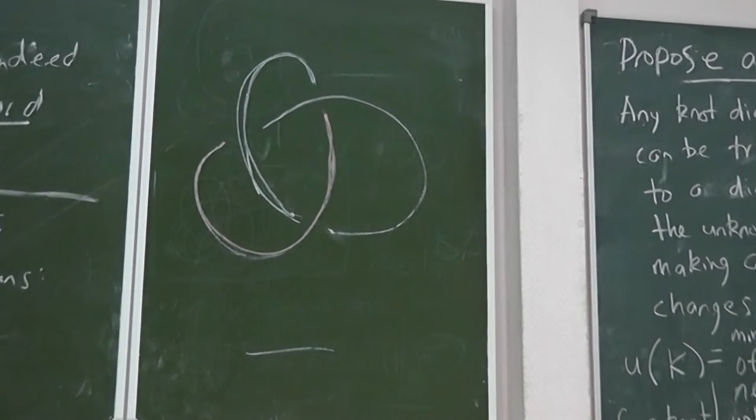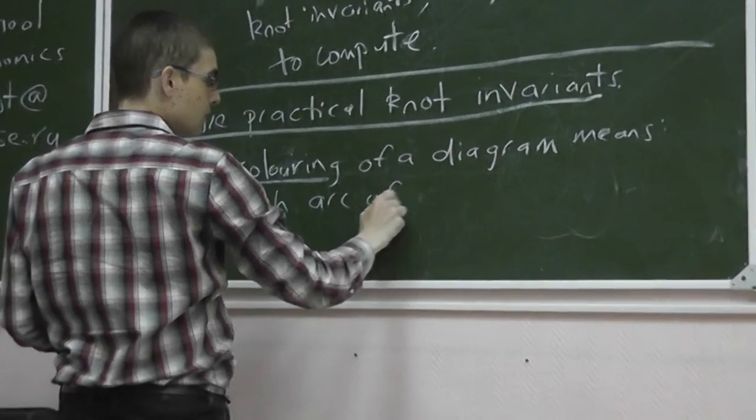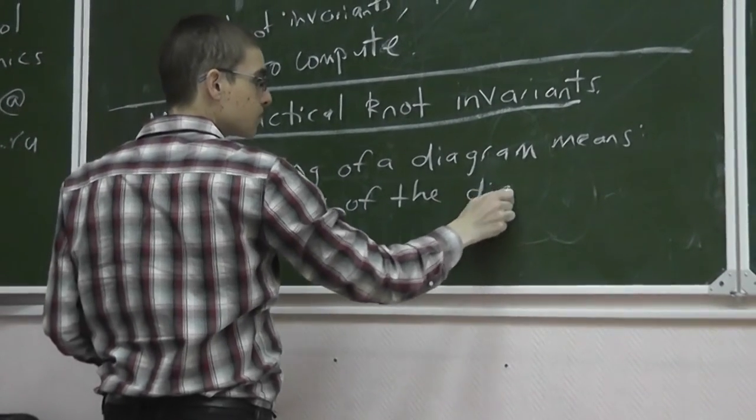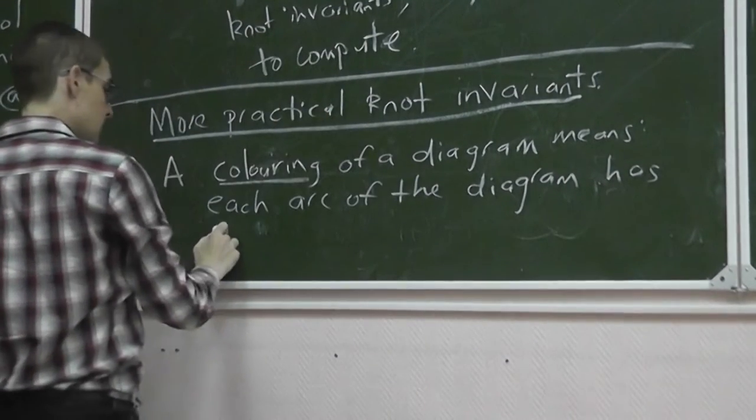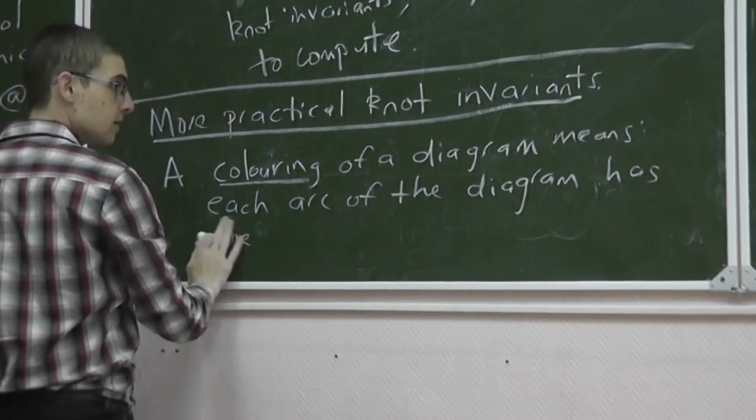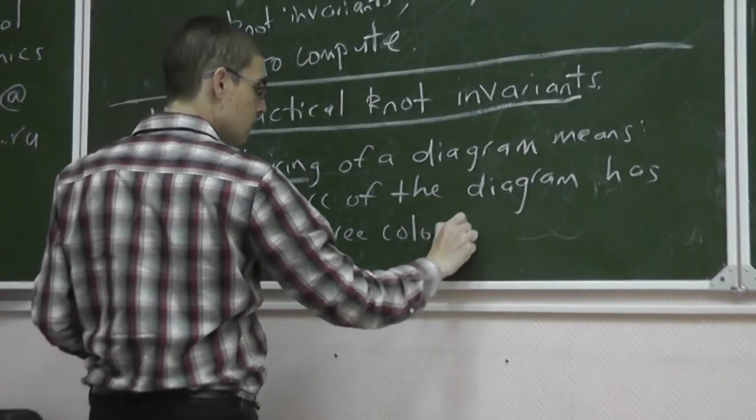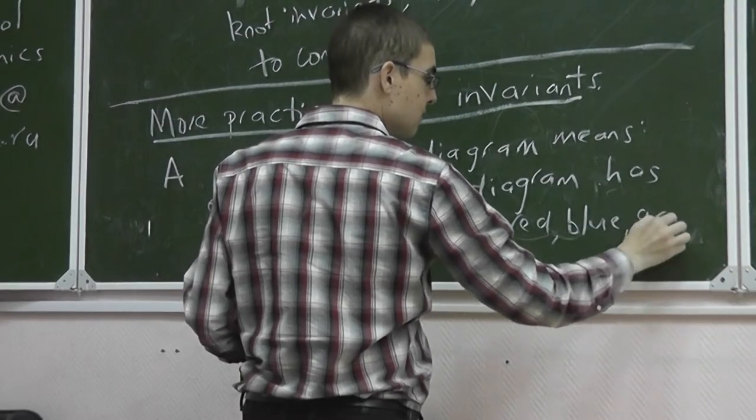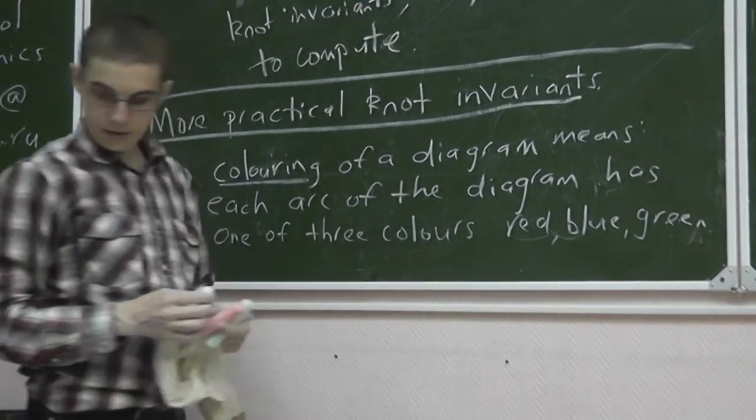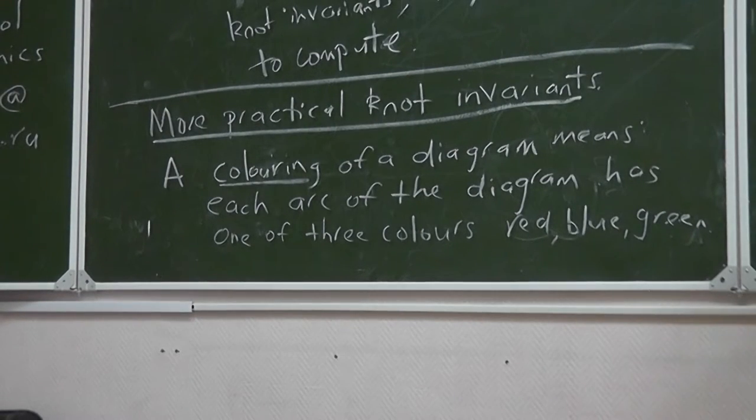Colouring a diagram means each arc of the diagram is one of three colours. Let's call them, let's make them red, blue, green.